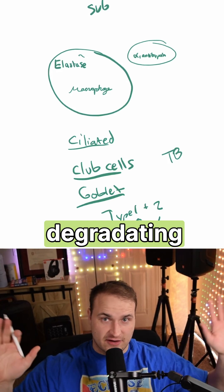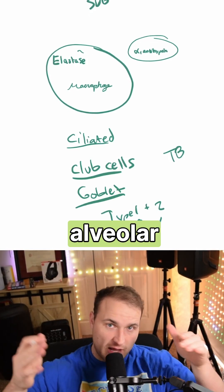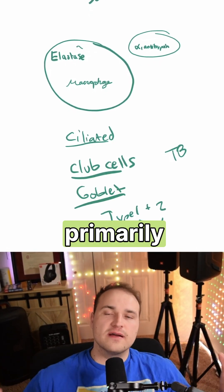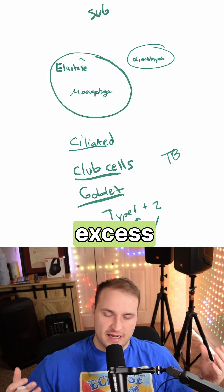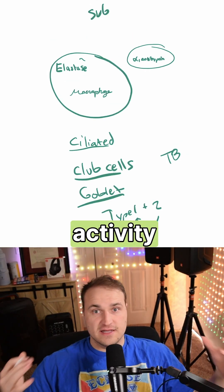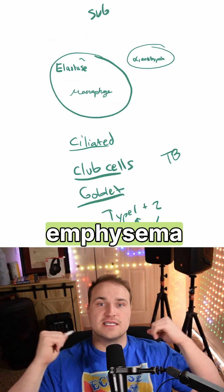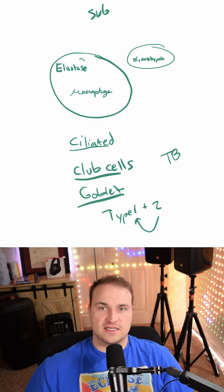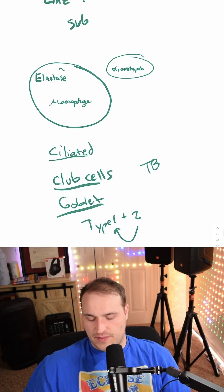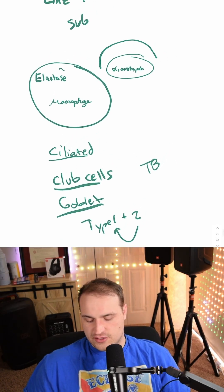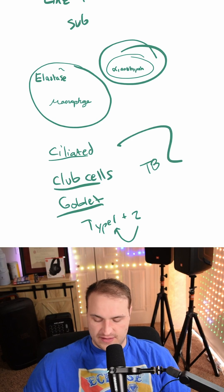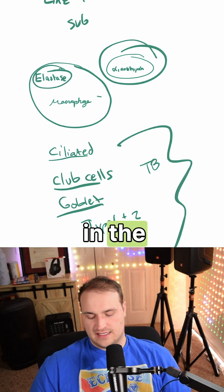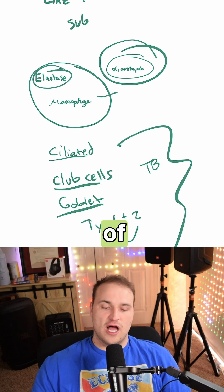Elastin-degrading proteases in normal alveolar fluid are produced primarily by alveolar macrophages, and excess activity is going to lead to emphysema when antiprotease defenses fail. So that's a little bit about alpha-1-antitrypsin, these high-yield cells, and elastase in the macrophages of your lungs.